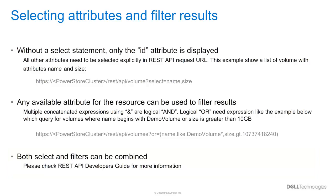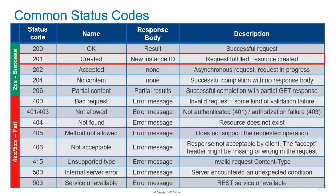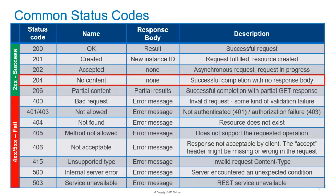In HTTP, every server response also reports a status or trunk code. This slide shows an overview of the most seen codes. The 200 area always means the request was successful. 201, for instance, is used when a new resource is created successfully and the system responds with a new instance ID. 204 is also a successful completion, but without body content, as used for a delete operation.